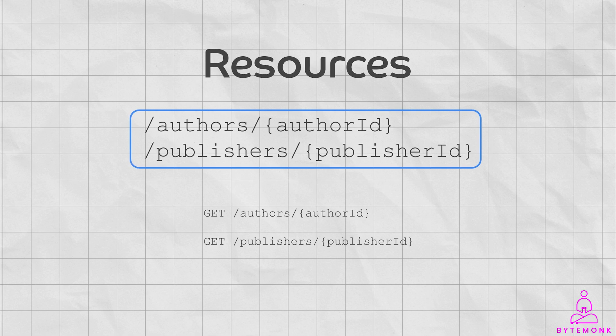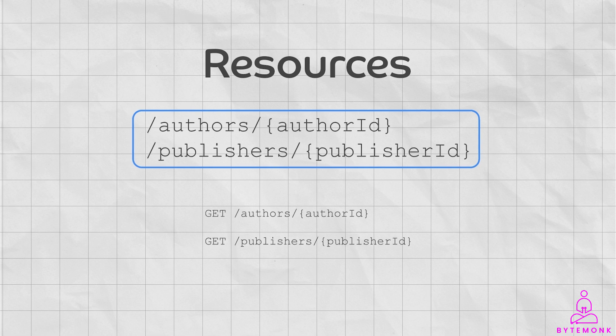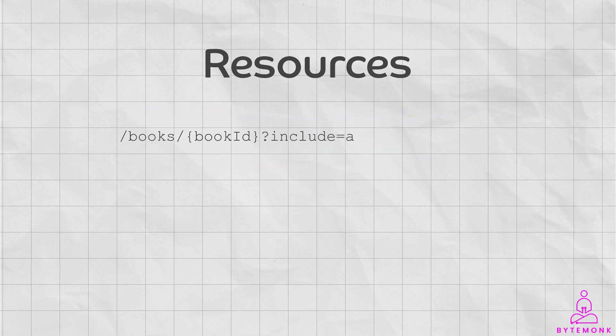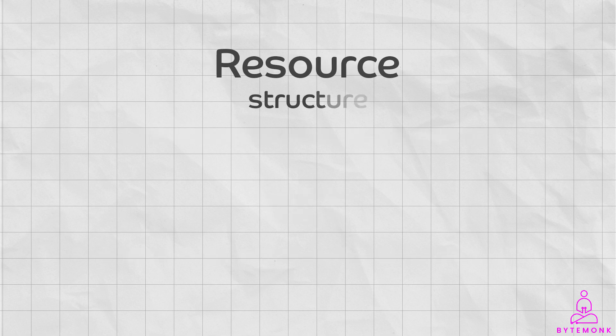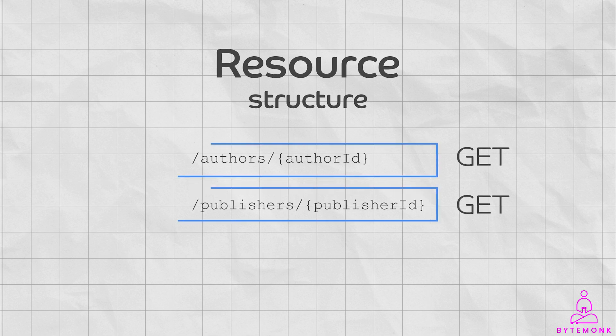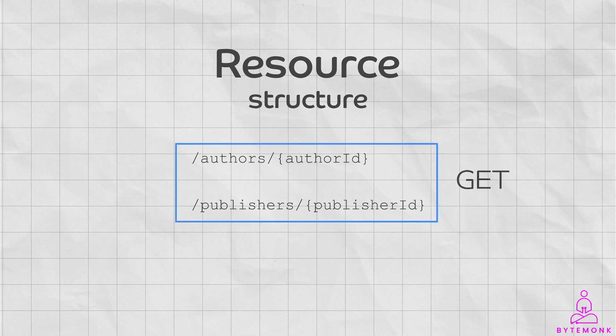You can use a GET request in REST to get the author and publisher of a book by passing the book ID in the request, and the response will contain both the author and publisher if the data is available. So whether or not you need to make multiple calls depends on how the resources are structured. If the resources are separate, you will need multiple calls; if they are contained in a single resource, you can get all the data in a single call.